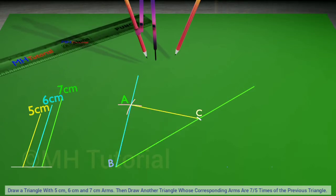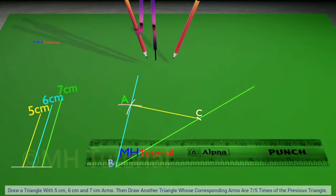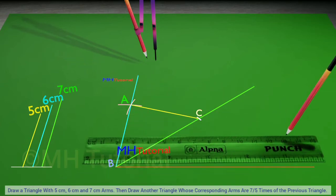Now the similar triangle to this given triangle will be drawn. For this we have to draw a straight line segment of arbitrary size from point B at an approximately 45 degree angle.